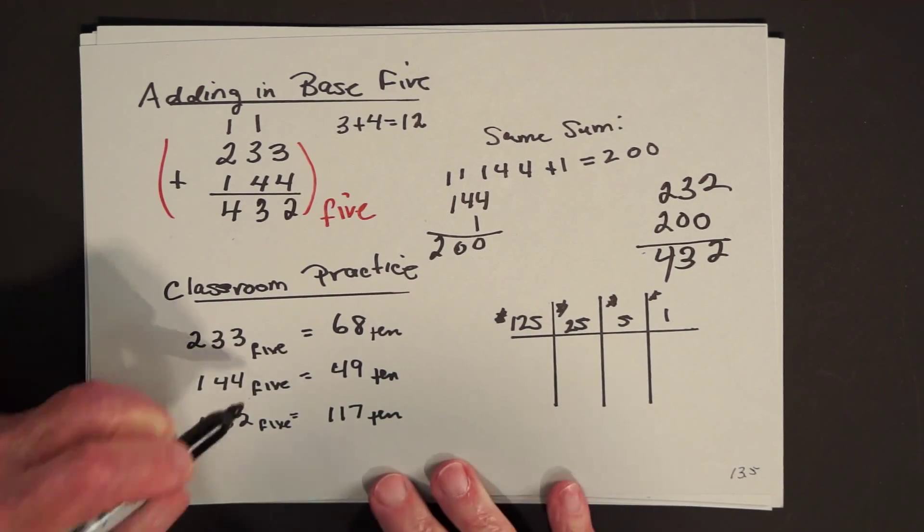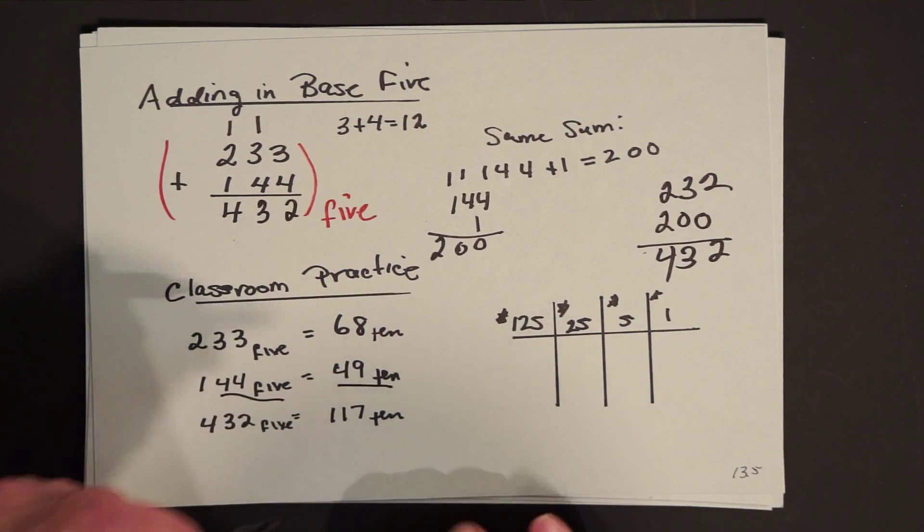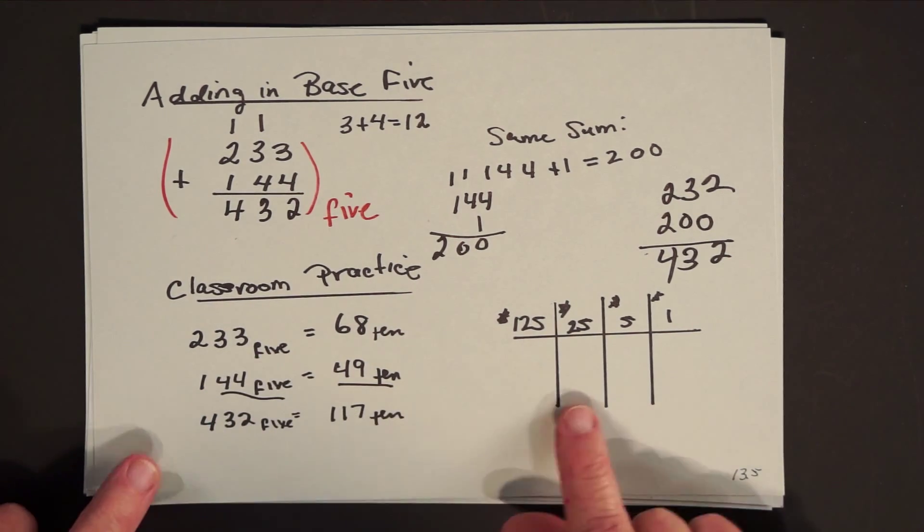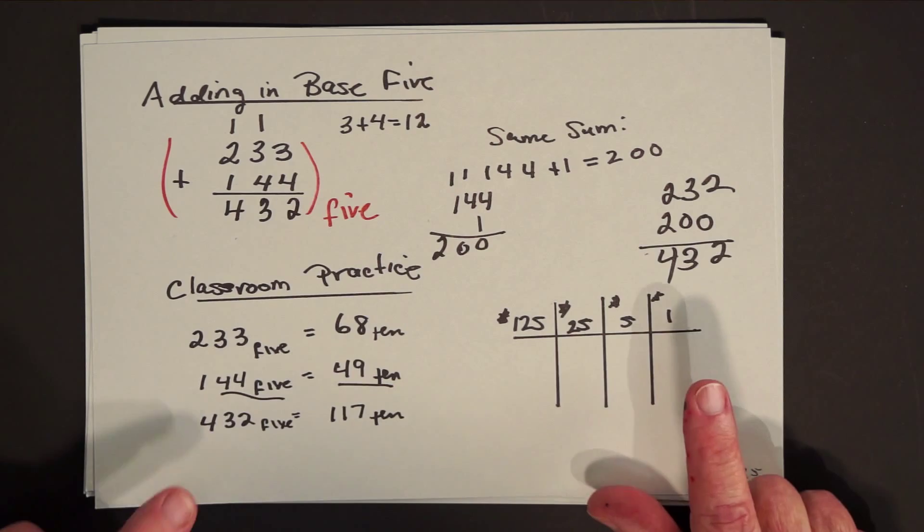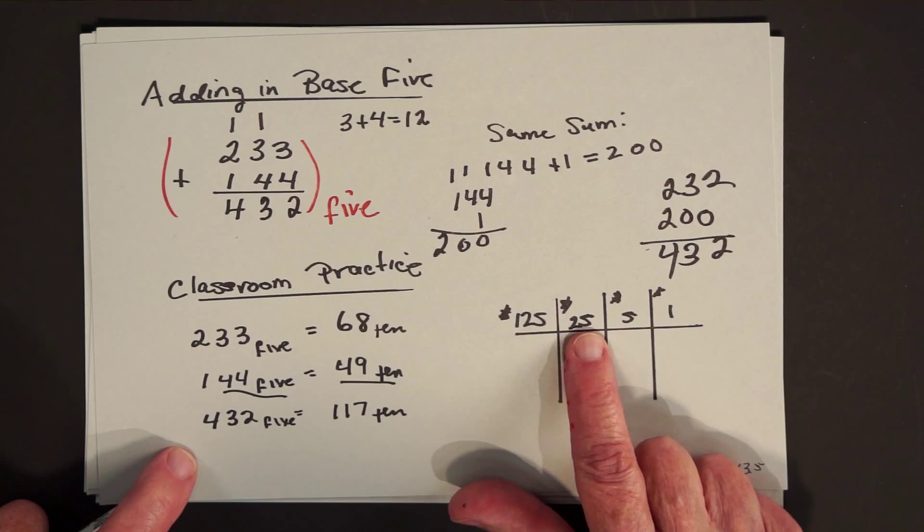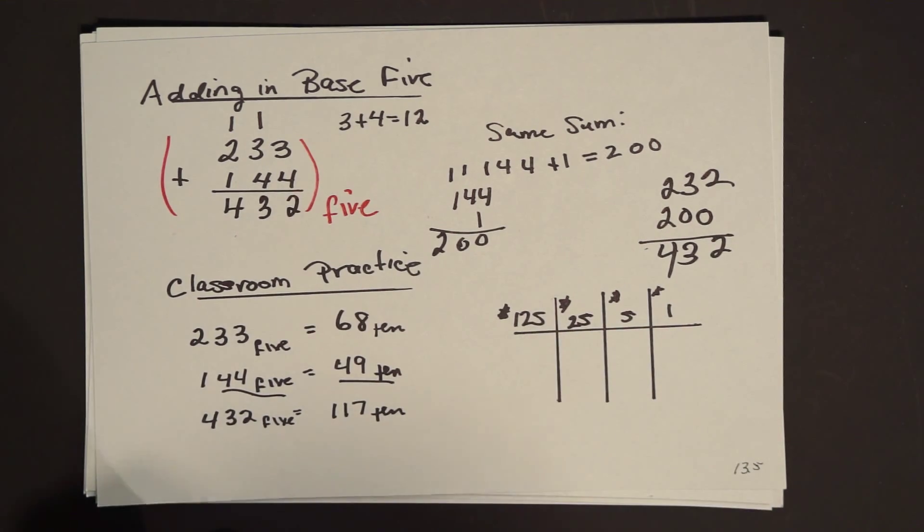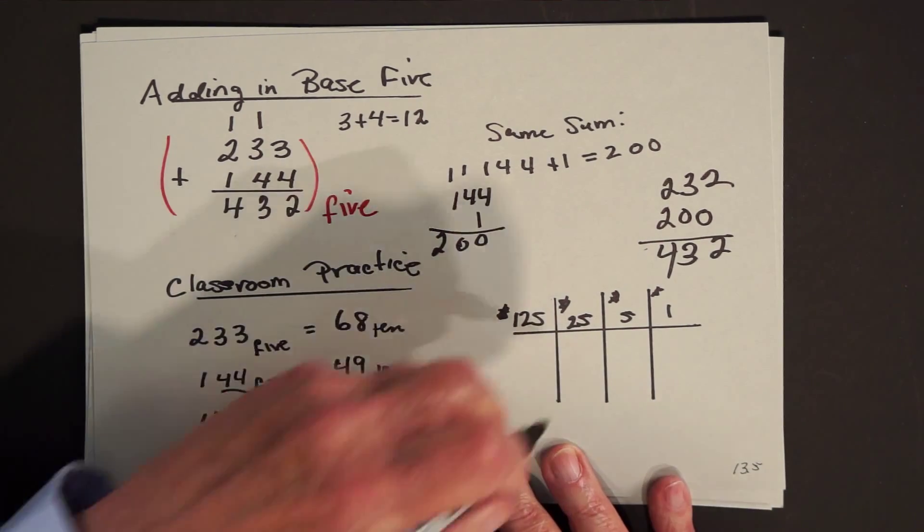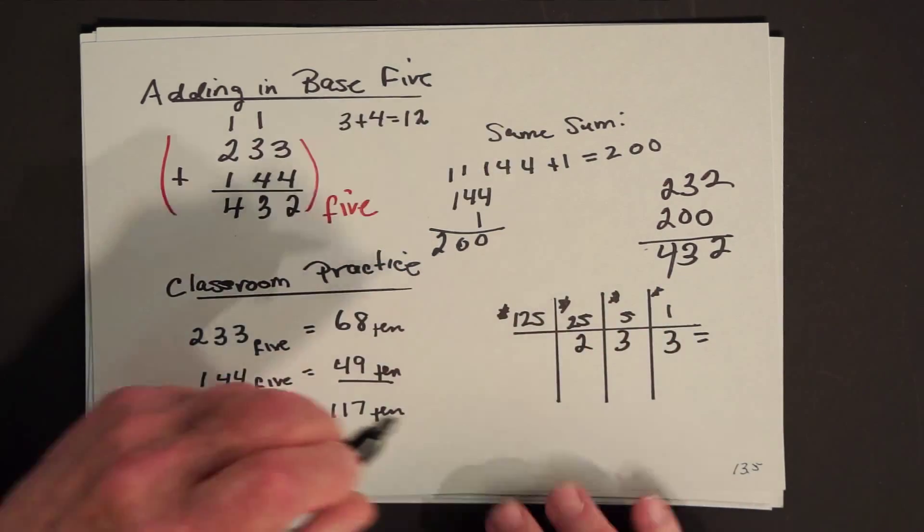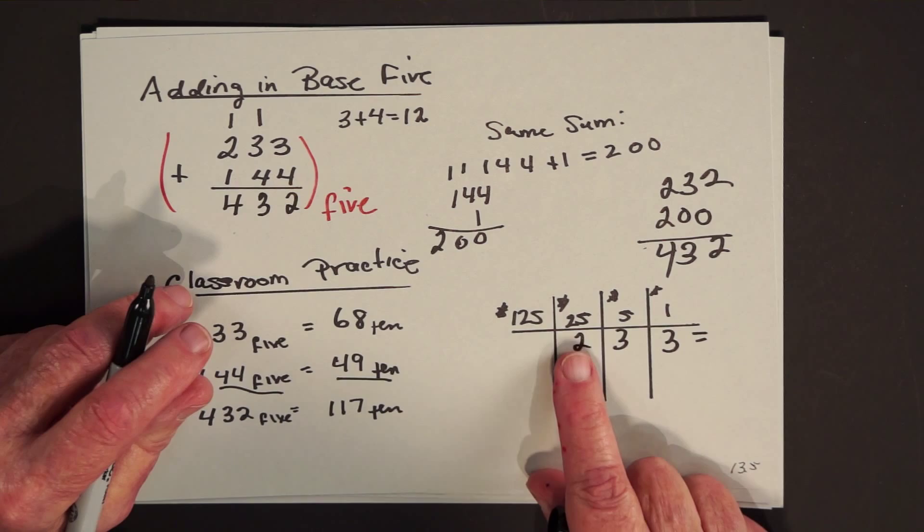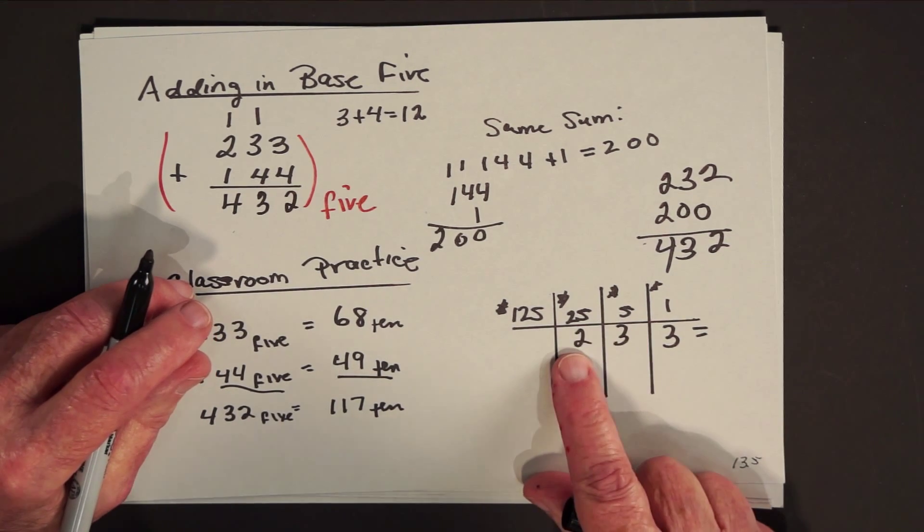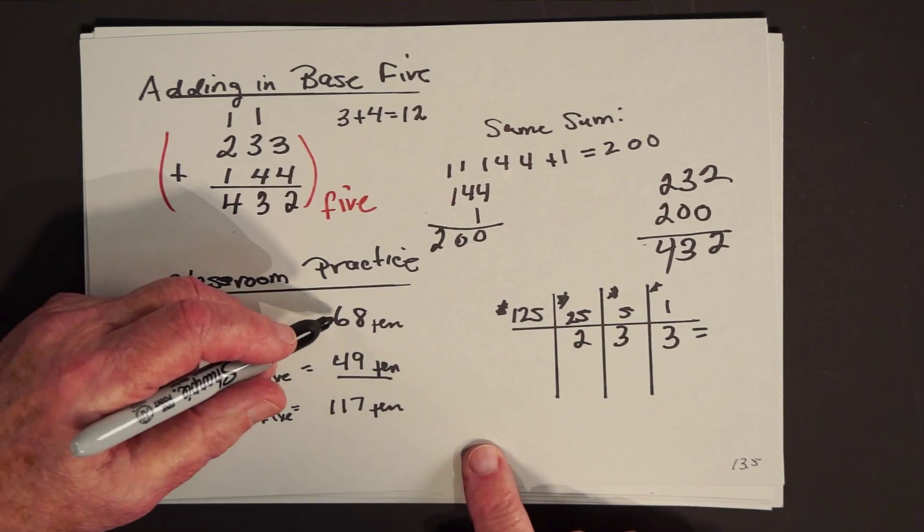What problem would it mean in base ten? So you say, okay, two, three, three, base five, let's do it in terms of money. You have one dollar bills, five dollar bills, twenty-five dollar bills. Five twenty-fives is one twenty-five. So you would have what? Two, three, three would mean you have two twenty-fives is 50, plus three fives is 15, 15 plus 50 is 65, and three more is 68.